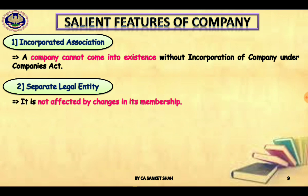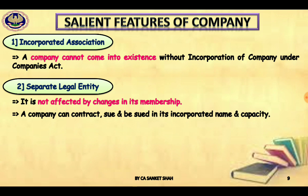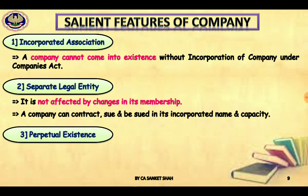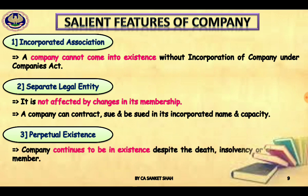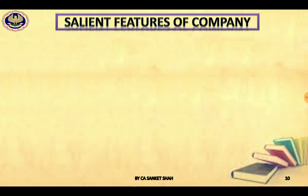Separate legal entity means a company is not affected by changes in membership. A company can contract, be sued and sue in its incorporated name and capacity. Perpetual existence means a company will continue for any number of years. Members may die, board of directors members may die, but the company will never die. A company continues to exist despite the death, insolvency, or change of members.